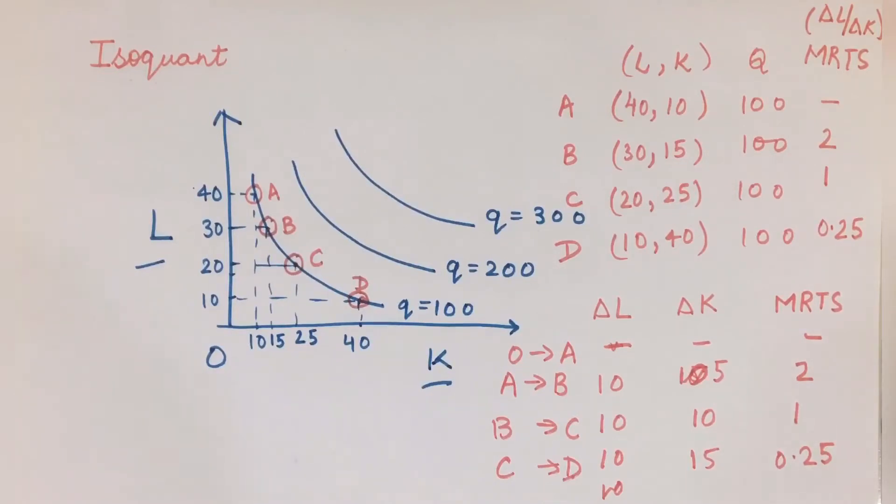Let's understand this by an example. If an entrepreneur is operating a firm and he uses 10 units of capital and 40 units of labor, then by combining these two he can produce 100 units of output. So (40, 10) is one combination - there are 40 units of labor in such a firm and 10 units of capital employed to produce 100 units of output.